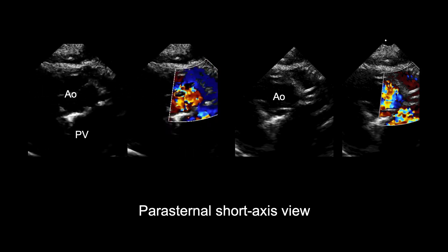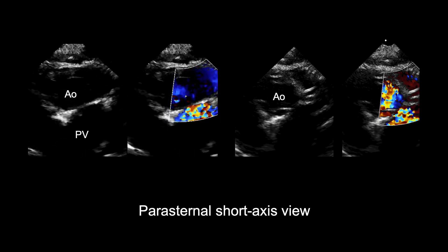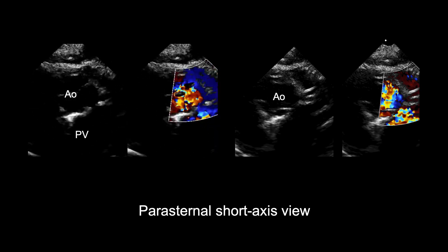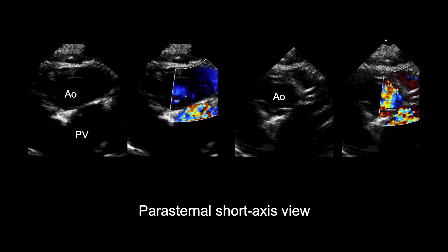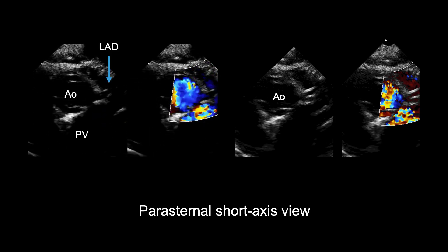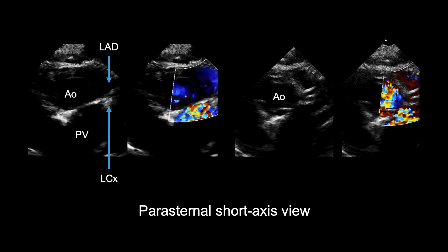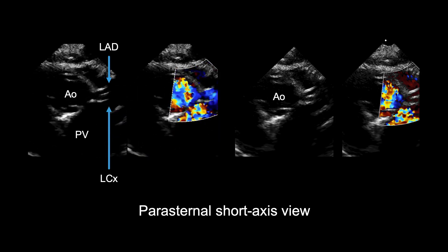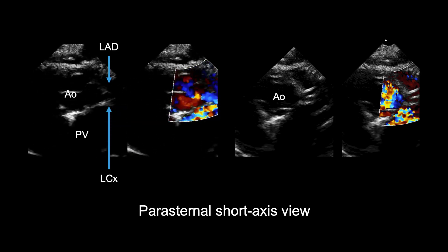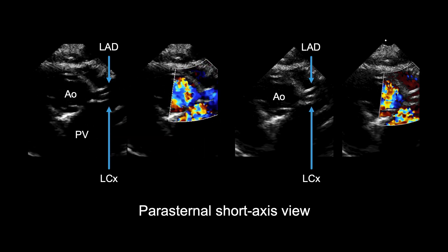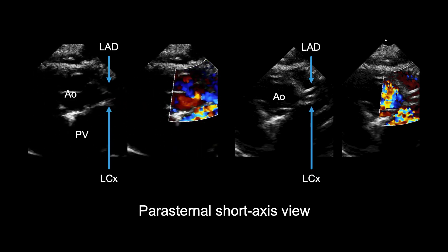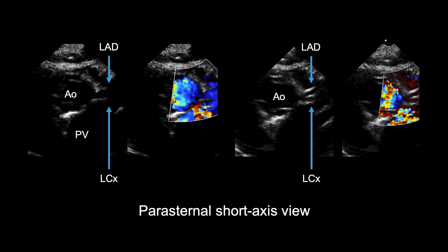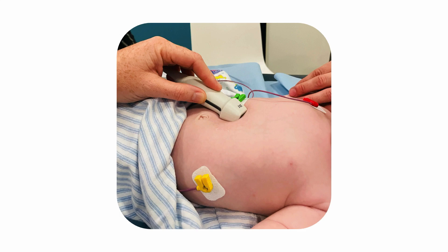This parasternal short axis image shows the left coronary artery origin arising from the left coronary sinus, then bifurcating early to give off the left anterior descending (LAD) and left circumflex arteries. It is usually helpful for coronary imaging to acquire a moving image first followed by a still image, as the coronary arteries can be difficult to appreciate due to motion of the heart. It's also helpful to assess the coronary arteries in different imaging planes such as subcostal views to further confirm their origins.